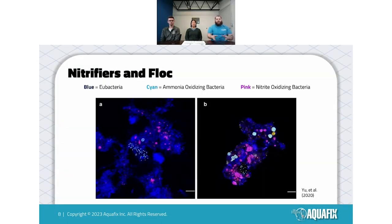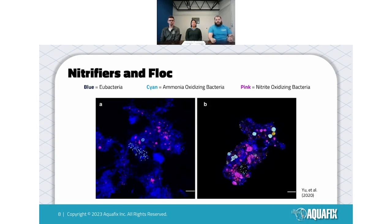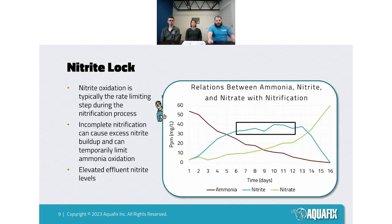In a fluorescent image of floc, we can see that most nitrifiers stick to the outside of the floc — that's where they like to be. They need a lot of oxygen and must come into direct contact with ammonia and nitrite. In a three-dimensional floc community of different organisms, ammonia oxidizers and nitrite oxidizers essentially work on the outside. If you don't have healthy floc, you won't have great nitrification — they need that home.